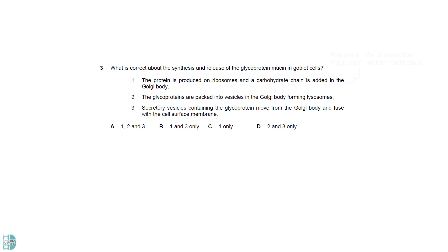1 is correct as the ribosome is the site of translation, and the Golgi body is where proteins are modified. 2 is wrong because lysosome is not used for exocytosis, so the glycoproteins should not be packaged into lysosomes. 3 is a correct description of how exocytosis occurs.